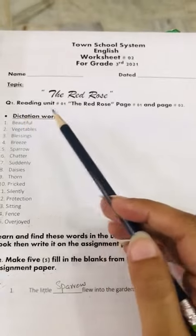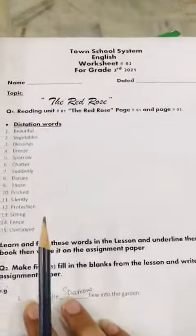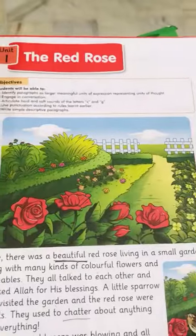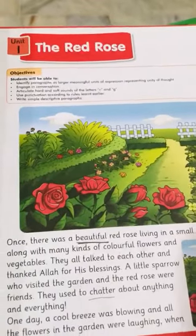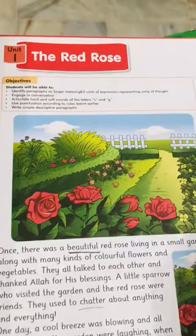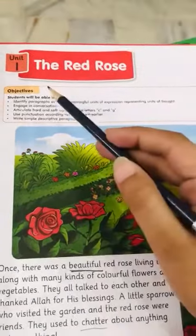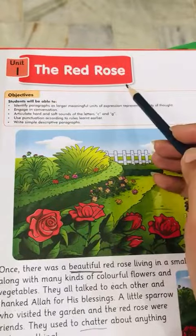Question number one: Reading unit one, The Red Rose, page one and page two. I'm going to read these lines for you. The rest of the lesson you will read by yourself. Unit one, The Red Rose.